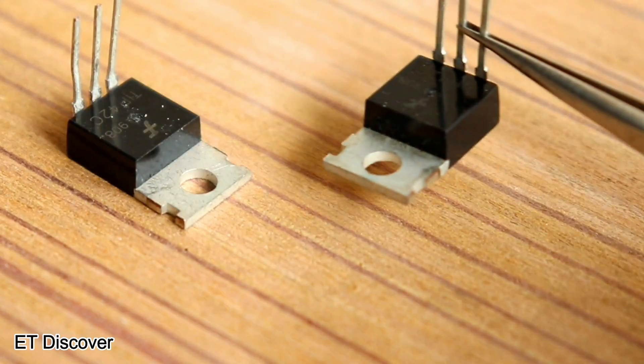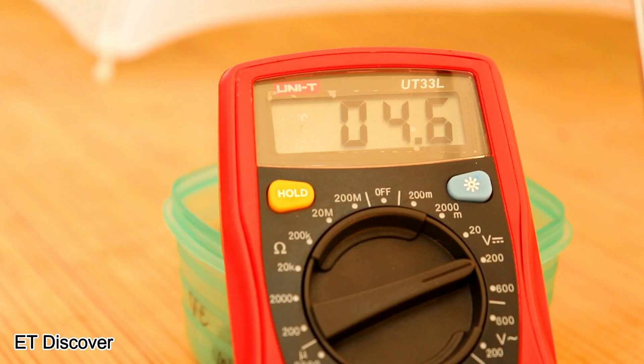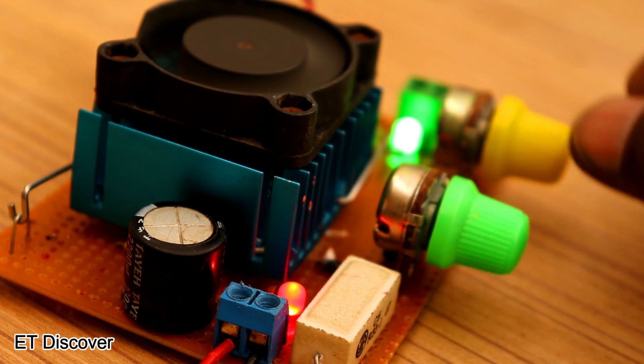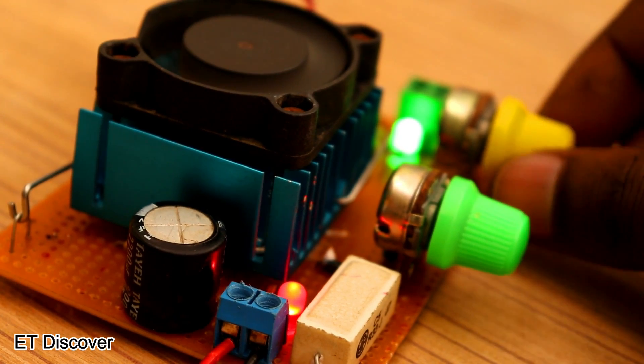We all know LM317 and LM338 are used for only voltage regulation purposes. But today I'm going to show you the easiest way to regulate both voltage and current with the LM338 chip.